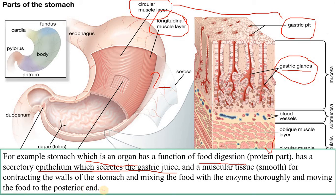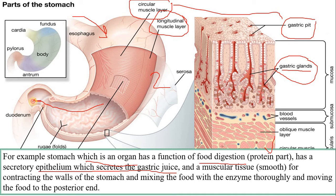And a muscular smooth layer is responsible for the contraction of the wall of the stomach and mixing of food with enzymes thoroughly, moving the food to the posterior end. یہ smooth muscles خوراک کو mix کرتے ہیں اور اس کی movement کرواتے ہیں toward the posterior end۔ یہاں سے خوراک آتی ہے esophagus کی side سے، اور یہ muscles خوراک کو پیستے رہتے ہیں۔ Posterior end کو ہم duodenum کہتے ہیں، جو small intestine کا first part ہے۔